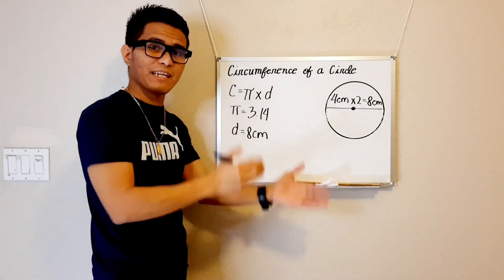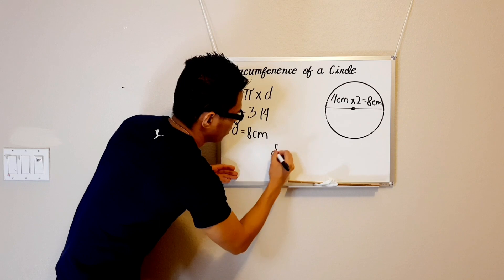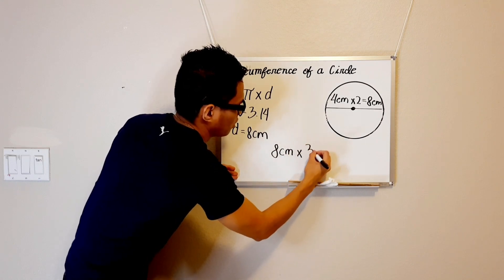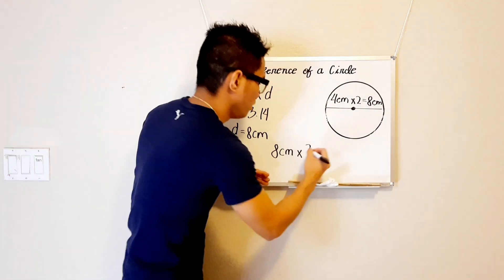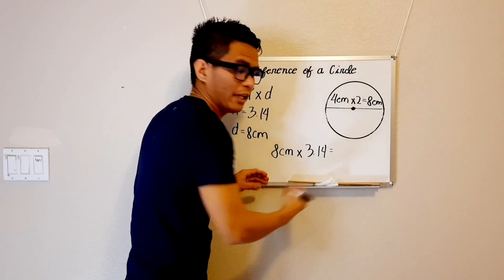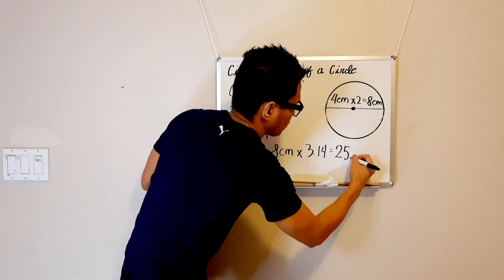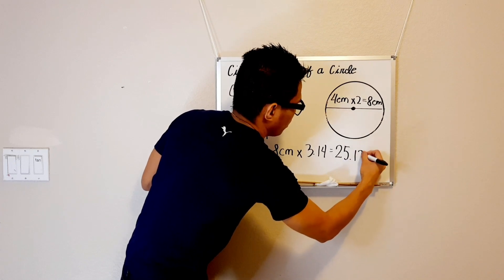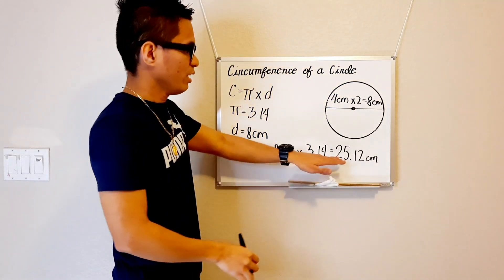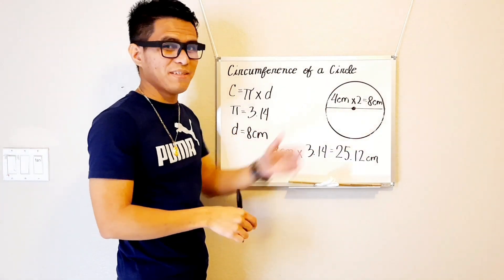To find the circumference of the circle, we're gonna multiply our diameter by our pi, which is 8 cm times 3.14, and that equals 25.12 cm. And 25.12 cm is the circumference of this circle.